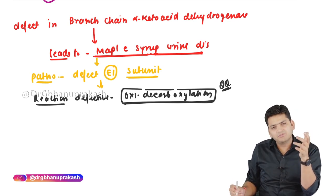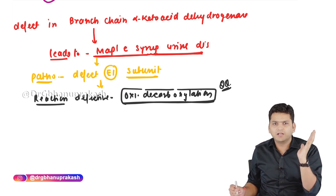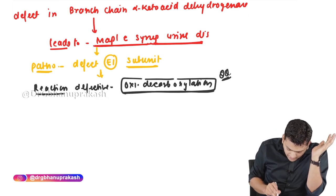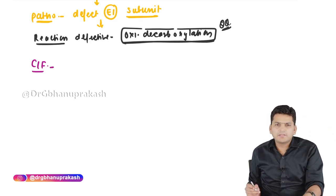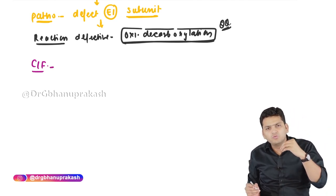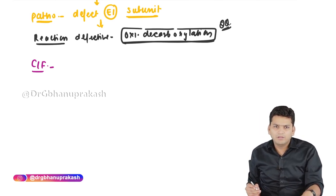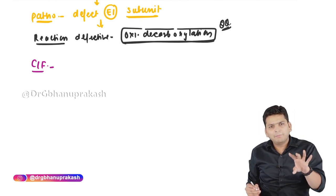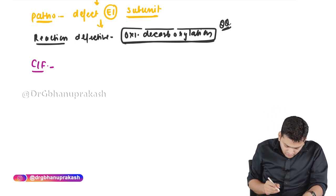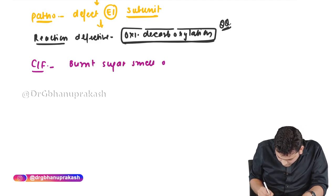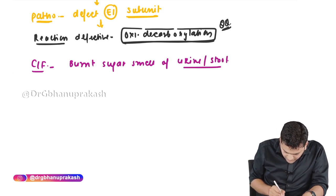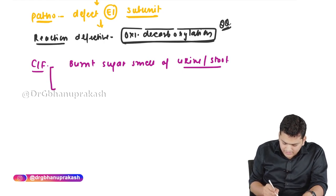Regarding clinical features: the name 'maple syrup' comes from the fact that the urine and stool will smell like maple syrup — which smells like burnt sugar. So patients will have a burnt sugar smell in their urine and stool. This is one very characteristic feature.